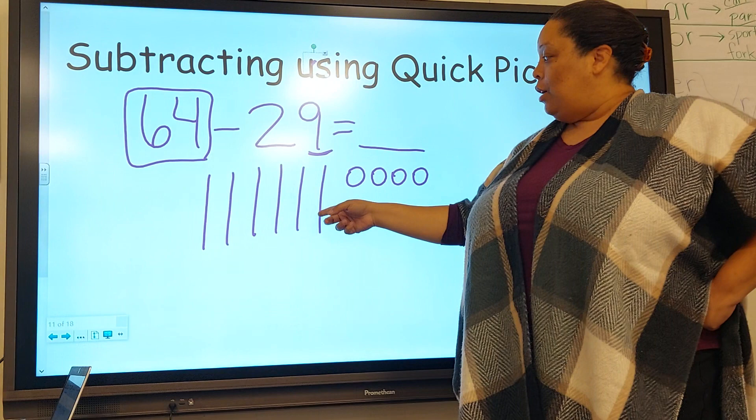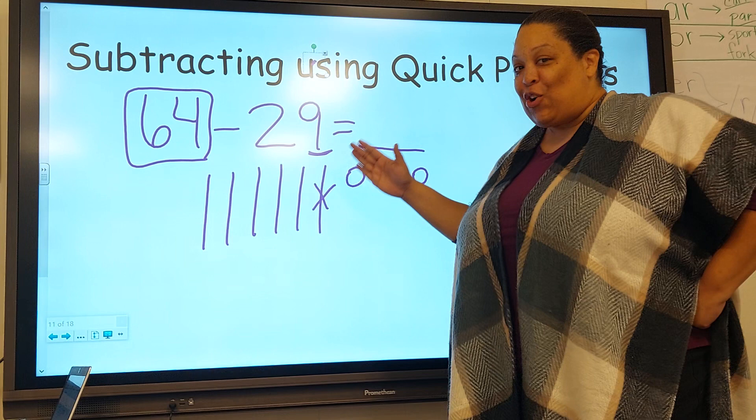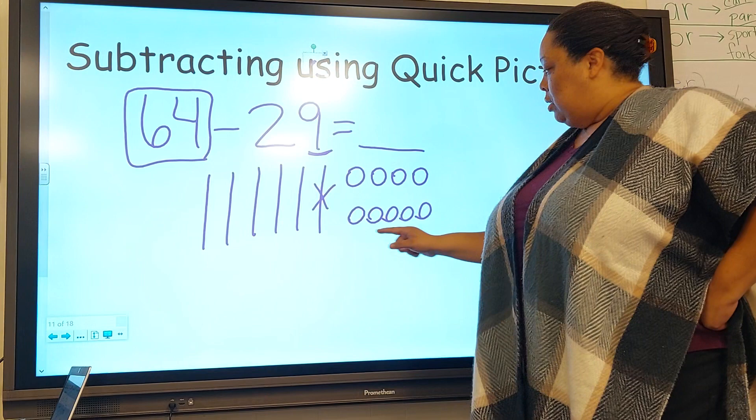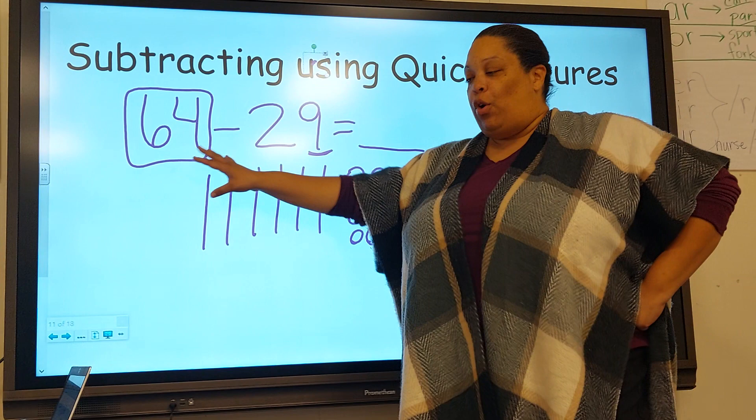Knock on our neighbor next door to the tens place and karate chop, hi-yah, karate chop that 10 stick and turn it into 10 ones. This is regrouping. I still have 64, but now I changed it a little bit. It's still 64, but now I have enough to take away nine ones.